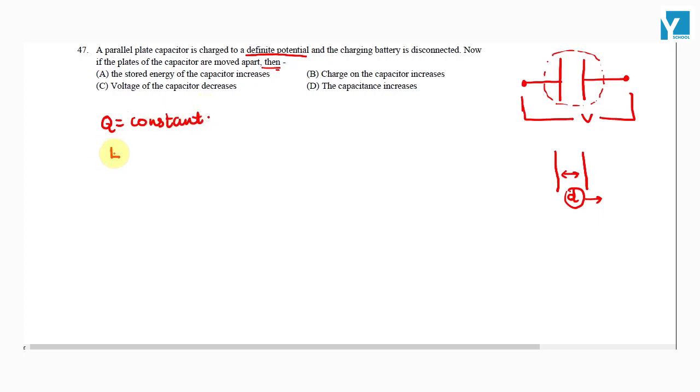The electrostatic potential energy between the plates will be half Q squared by C, so half Q squared by epsilon naught A by d.